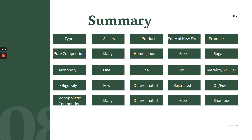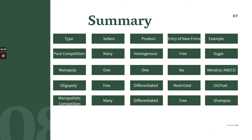In summary, let's look at the types of market structures. For pure competition: there are many sellers and many buyers, the product is homogenous — meaning they are the same — and entry of new firms is free. You can easily enter the market. Examples include sugar, eggplant, and okra.